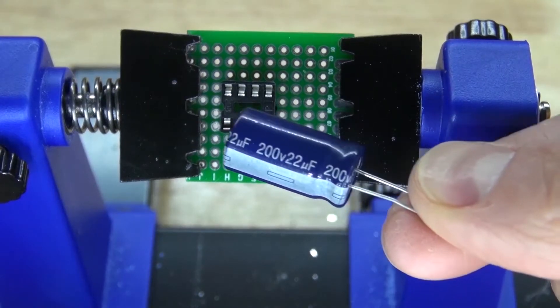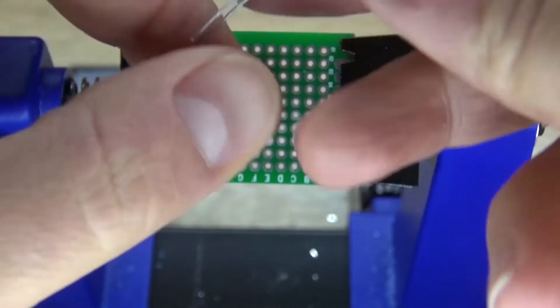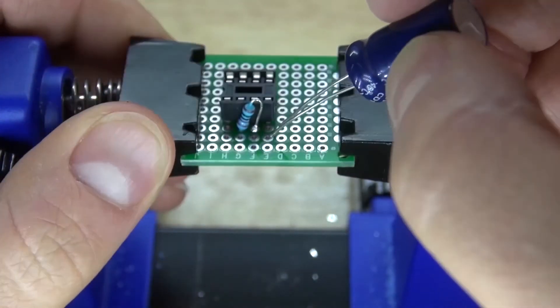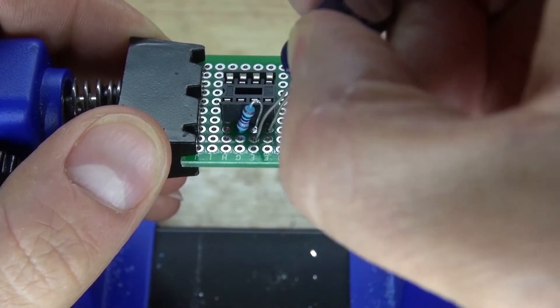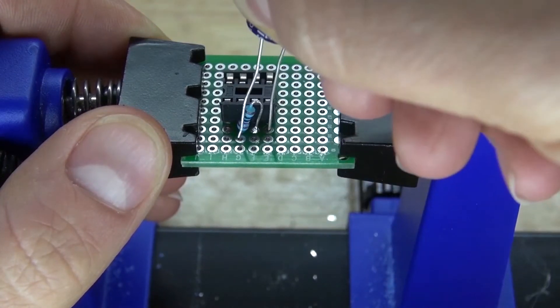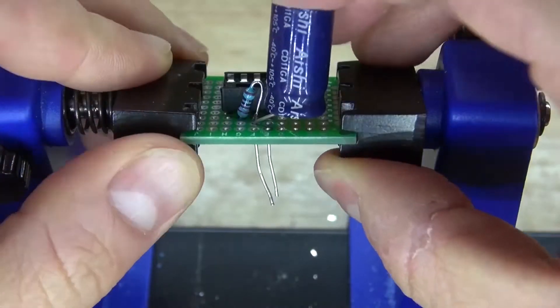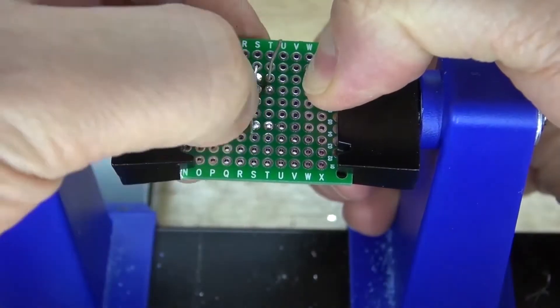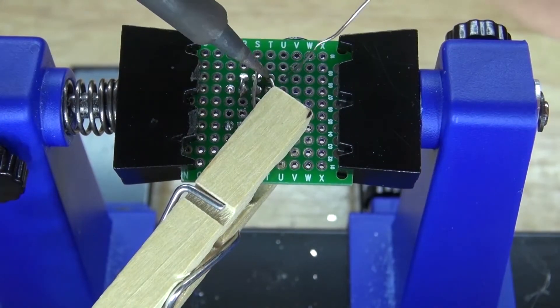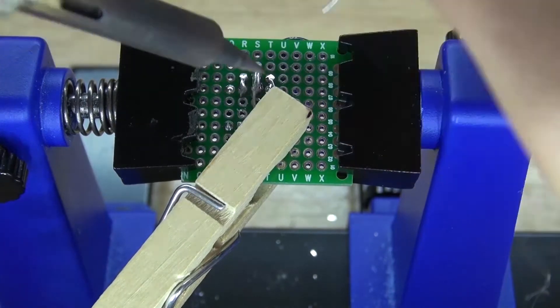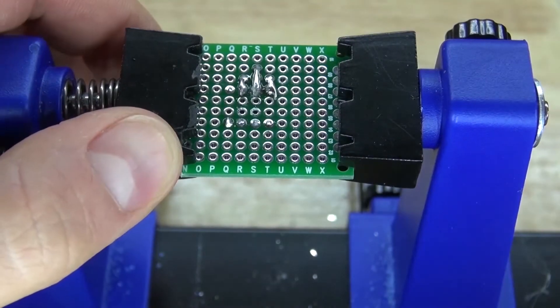Next you're going to need to take your 22 microfarad electrolytic capacitor, where this side is a negative and this side is positive. What you need to do is connect the negative to pin 4 and the positive to pin 3. Just like that, push it in and bend it over. Bend over the leads so you can solder bridge them together. Cut off the leads and it should look just like this.